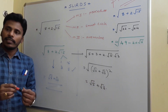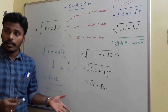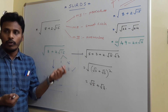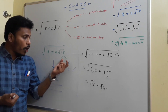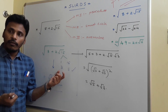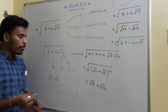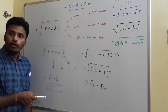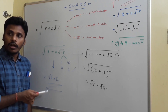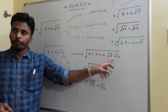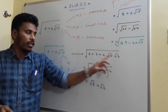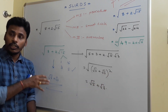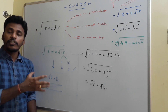In Method 2, the smart trick, you split 15 as the product of two numbers. Among the choices, select the pair whose sum equals 8. Here the choice is 5 and 3, because 5 times 3 is 15 and 5 plus 3 is 8. Then directly announce the answer as root 5 plus root 3. Or, rewrite 8 plus 2 root 15 as 5 plus 3 plus 2 root 5 root 3, which equals root 5 plus root 3 whole square.